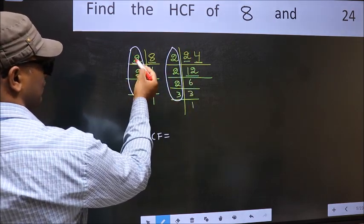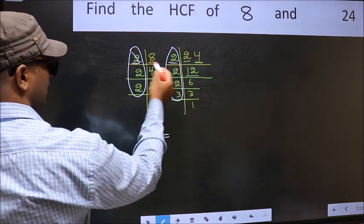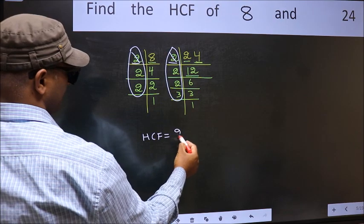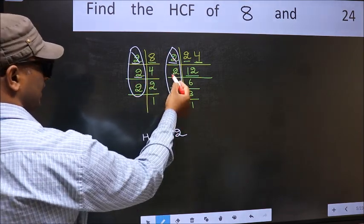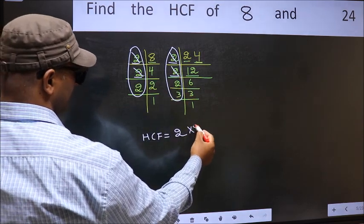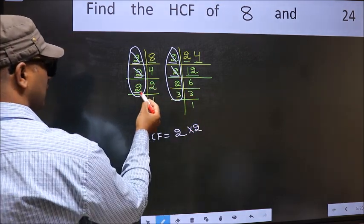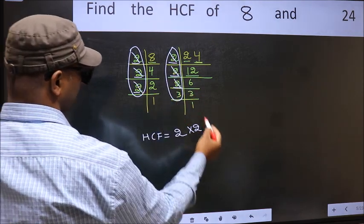Starting with the number 2. Do we have 2 here? Yes. So cut 2 right here. Next number 2. Do we have 2 here? Yes. So cut 2 right here. Next number 2. Do we have 2 here? Yes. So cut 2 right here.